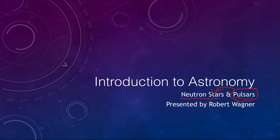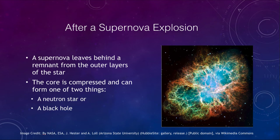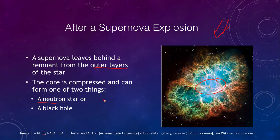Let's look at what happens after a supernova explosion. This is the Crab Nebula, which is the supernova explosion that occurred in 1054. The outer layers of the star are expelled out into space, but the core left behind can be one of two things: a neutron star if it is less than about three solar masses, or a black hole if it is greater than three solar masses.